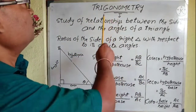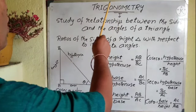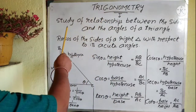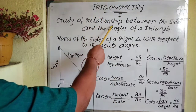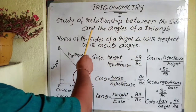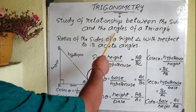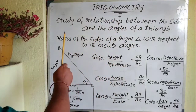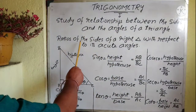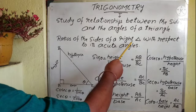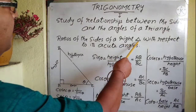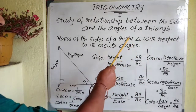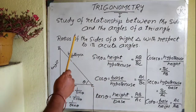Today we will see a new chapter: trigonometry. Now, what is trigonometry? Trigonometry is actually the study of relationships between the sides and the angles of a triangle. We will consider ratios of the sides of a right angle triangle with respect to its acute angles.